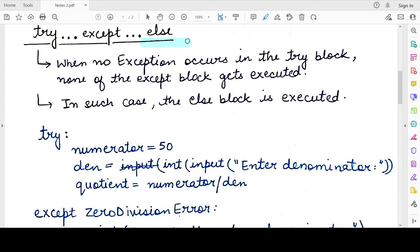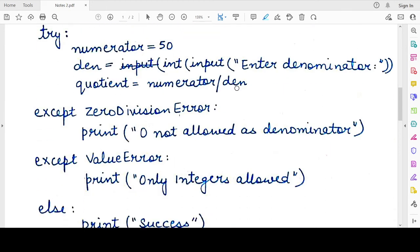But you also want some code to be executed when none of these except clauses gets executed. So when the try block executes successfully and no exceptions are raised, in that case, you can use the else block and this else block will only be executed when no except block gets executed. That is no exception is raised.